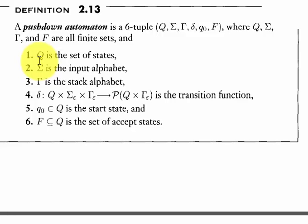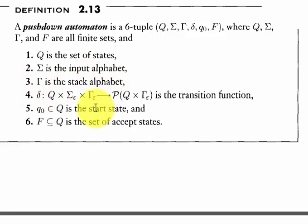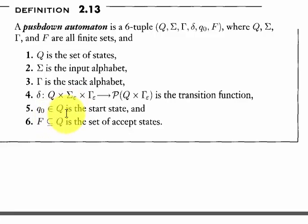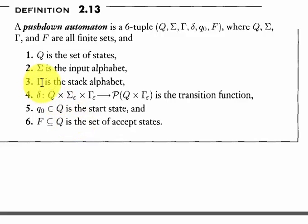A pushdown automata is a six-tuple. It has Q, a set of states; an input alphabet; a stack alphabet, which is the one that keeps count of the inputs; transition functions; a start state; and a set of accepting states — just as usual. The only thing that's different here is the stack alphabet.